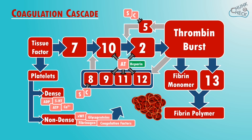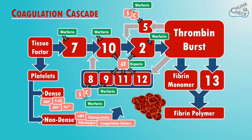Warfarin is the other anticoagulant you'll be familiar with. This is a vitamin K antagonist, so by reducing the amount of available vitamin K, warfarin stops all vitamin K dependent clotting factors from doing their job, and these are factors 2, 7, 9 and 10, as well as protein C and S.